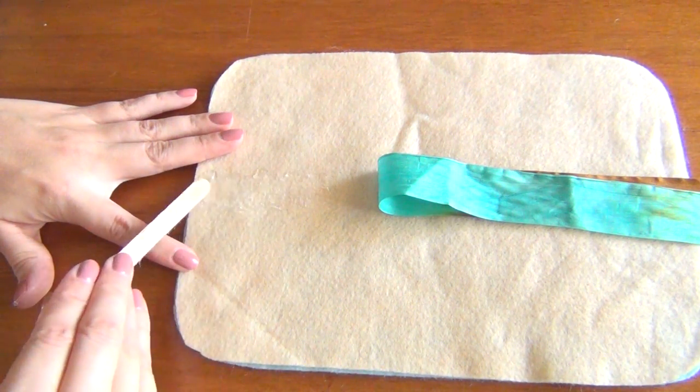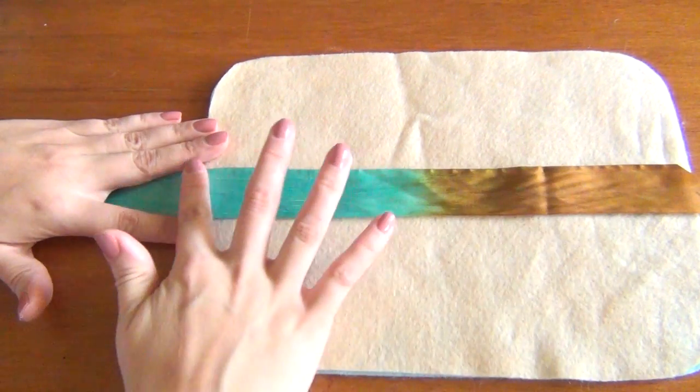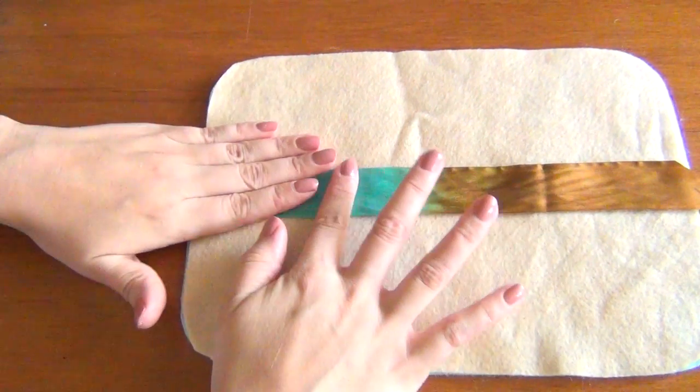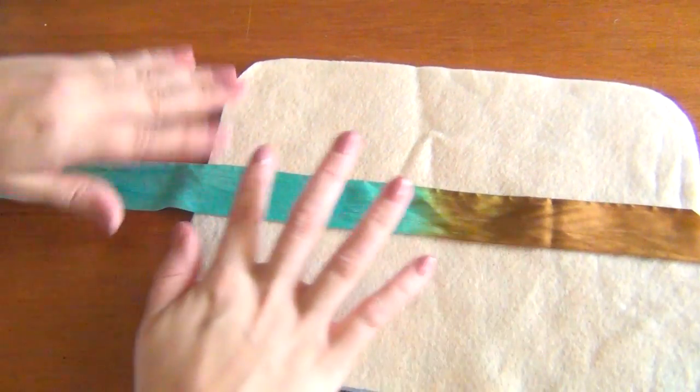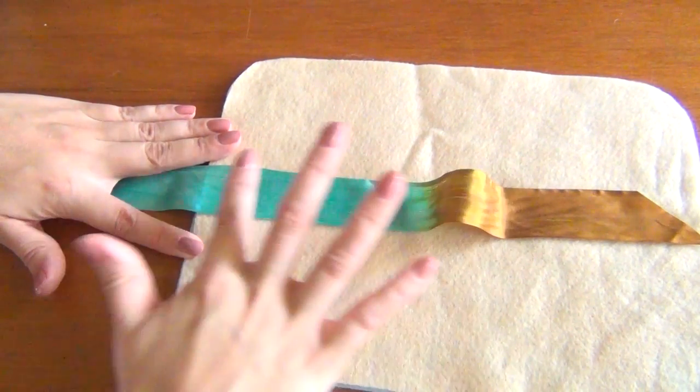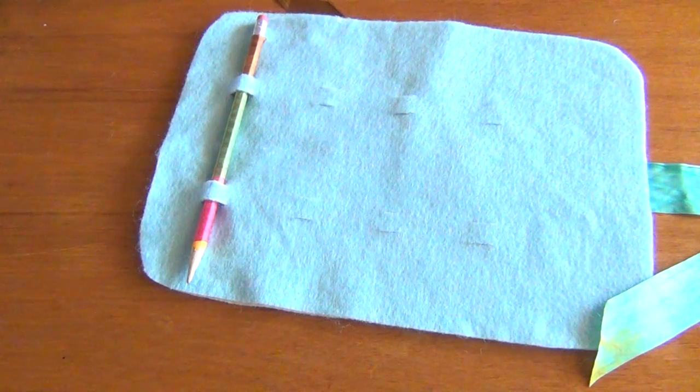Smooth out a little bit of your Fabri-Tac glue and press your ribbon into place. It will hold securely just make sure you don't have any globs of glue and spread a nice thin layer. And that is your finished pencil case.